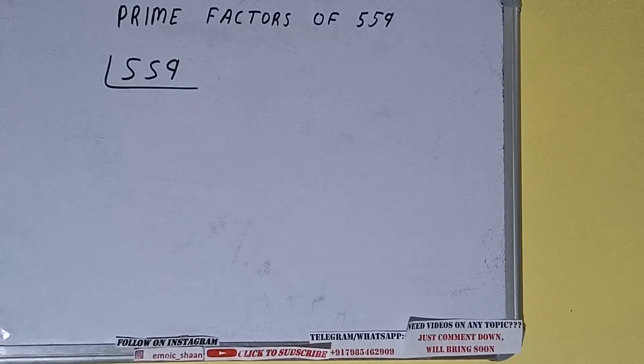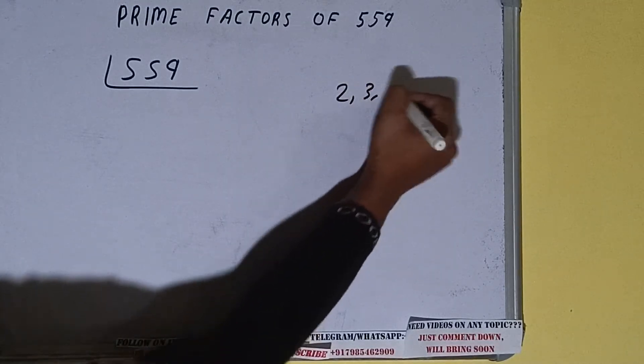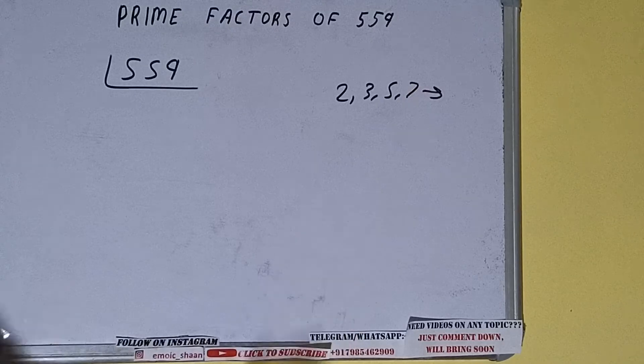The next thing we need to know about is what are prime numbers. So prime numbers are numbers that are divisible by 1 and the number itself, like 2, 3, 5, 7, and so on. Alright.